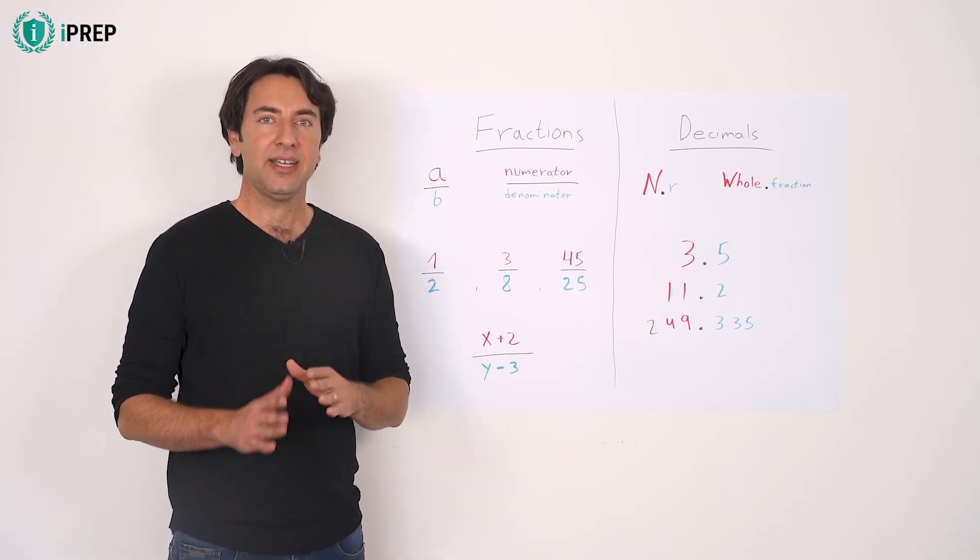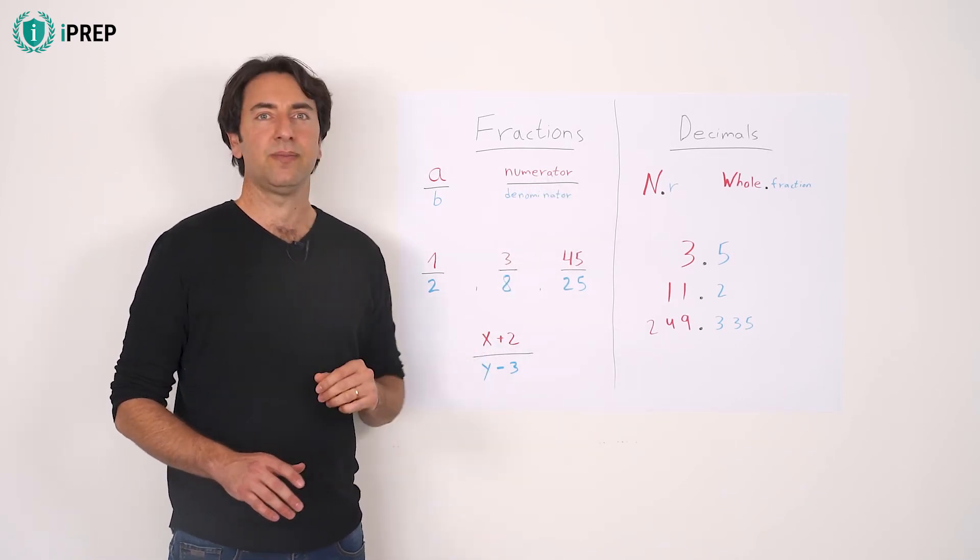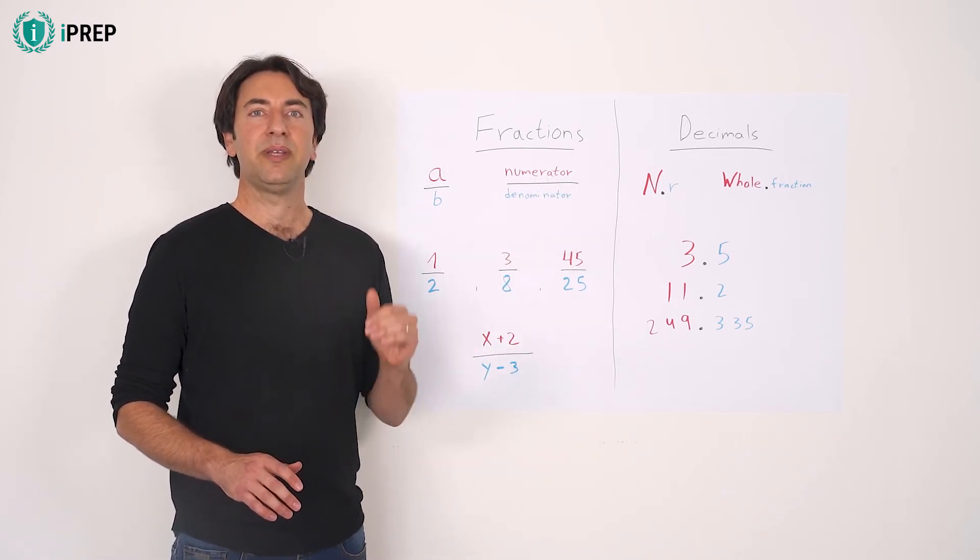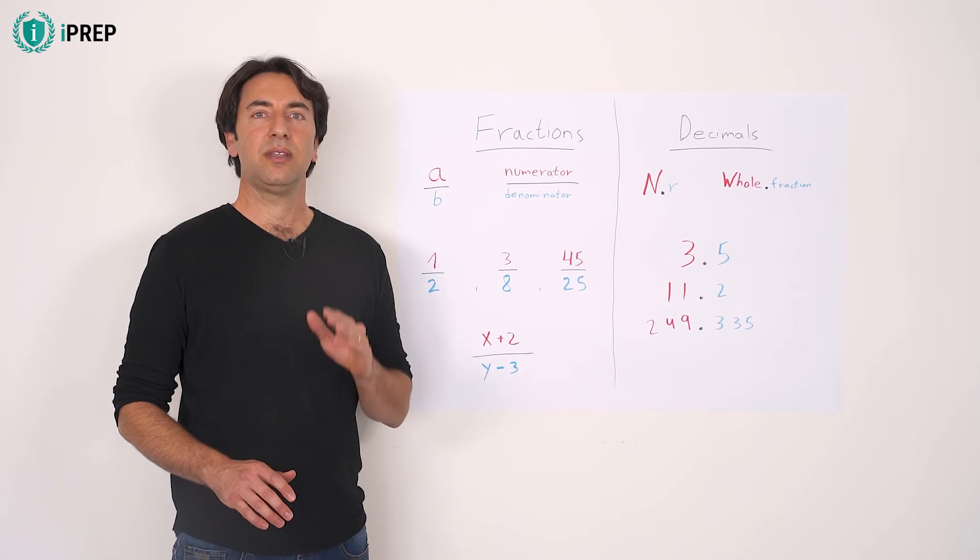The number above the line A is called the numerator, and the number below the line B is called the denominator.